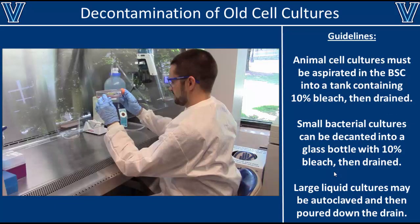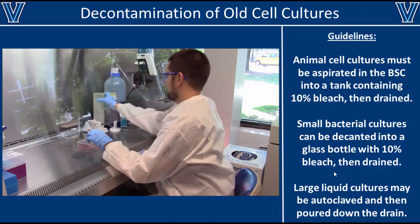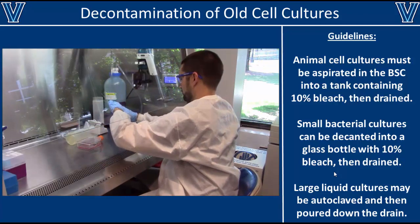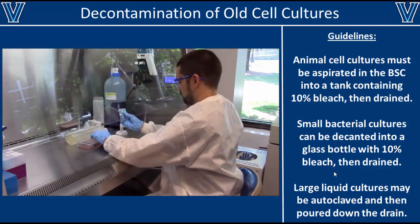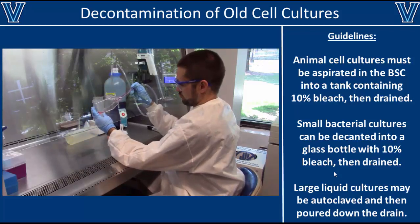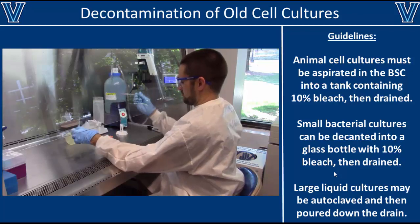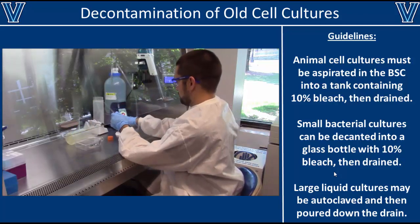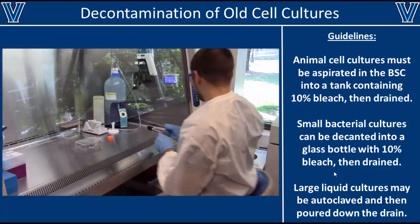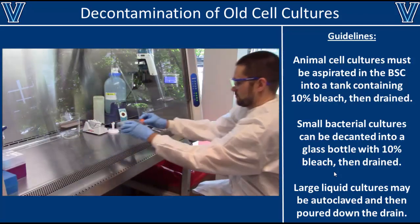Once you are done working with your cells or biological samples, you want to decontaminate them fully to prevent any possible cross-contamination or buildup of biohazardous wastes in the lab. If you are working with animal cells, take them into the hood and fully aspirate all of the media off of the flask or plate. The aspirator tank should always contain about 10% by-volume bleach, which will sterilize any media and cells that you aspirate away. Once you are done aspirating, be sure to put the Pasteur pipette in the glass waste, and you can put the flask in the biohazard box.